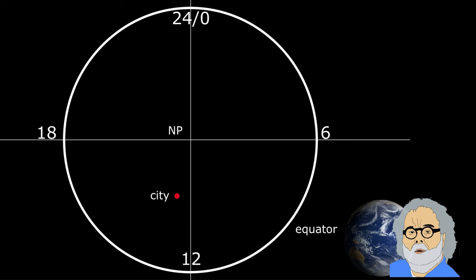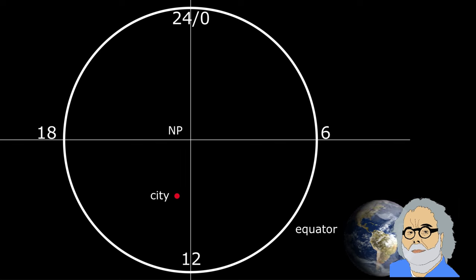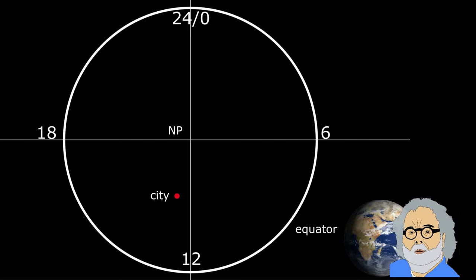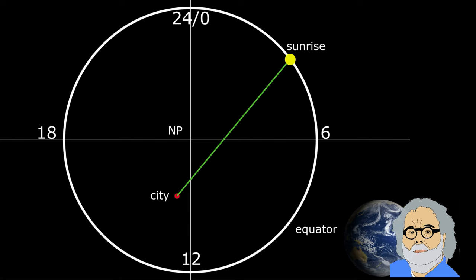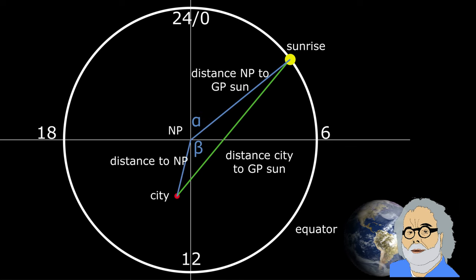In a circle representing the 24 hour day I first positioned the location. Its distance to the north pole - on the flat earth model that is the center point of the equator - I calculated on the basis of the latitude of the location. Its position relative to the timescale I established by calculating the difference between the time of culmination and 12 o'clock. From the location we can draw a line towards the time of sunrise and complete a triangle: city, ground point of the sun, north pole.